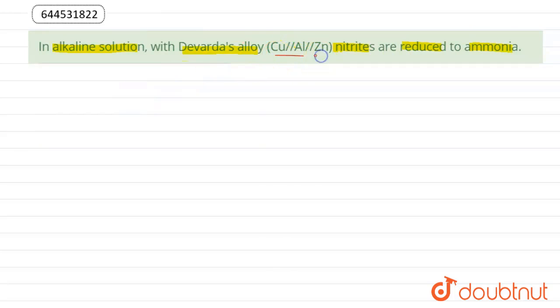copper, aluminum, and zinc. This is used as a reducing agent in analytical chemistry for the determination of nitrate after their